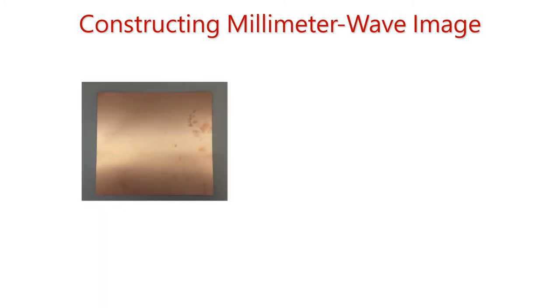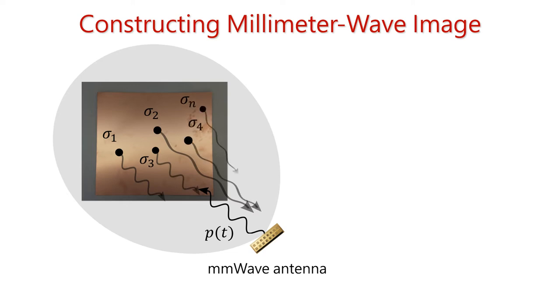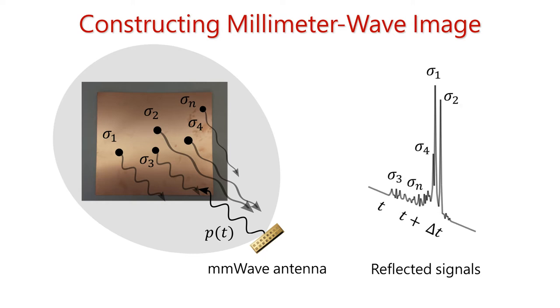Before that, let us take a look at how the imaging systems actually work. Consider this very simple example of imaging this square shaped object using millimeter wave signal. A millimeter wave antenna sends a broadband signal using a wide beam width towards the object. Each of those points in the object reflect back the signal, and the millimeter wave antenna can measure those reflected signals rapidly.